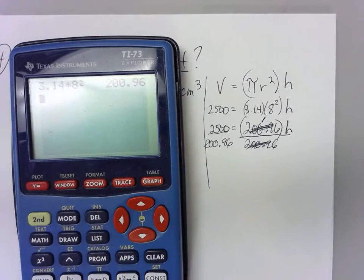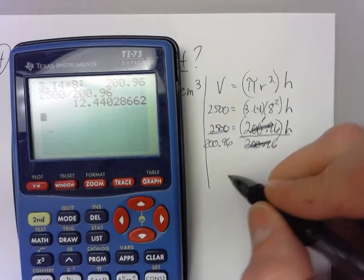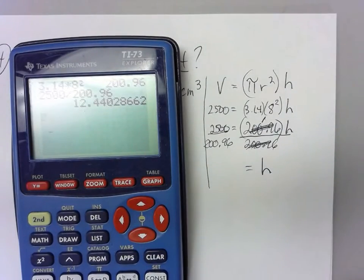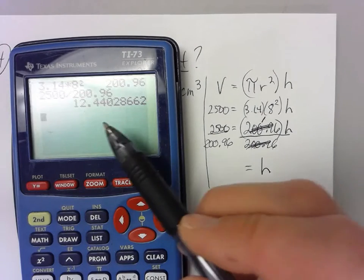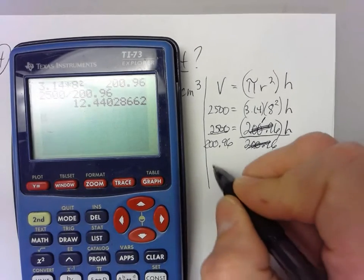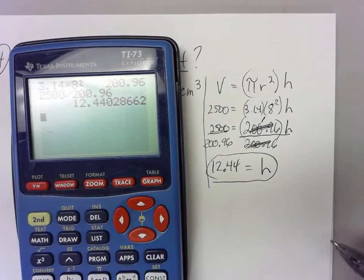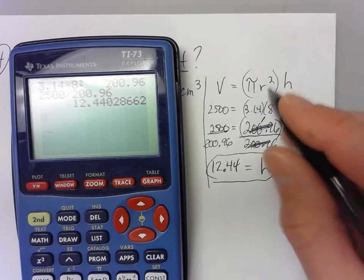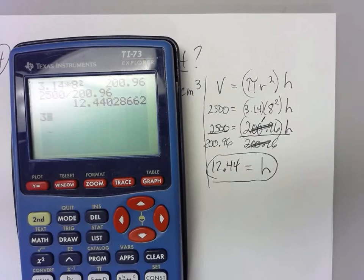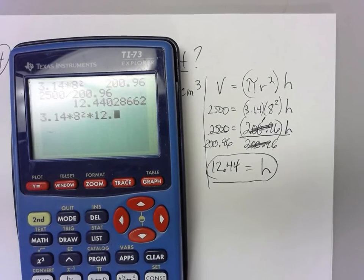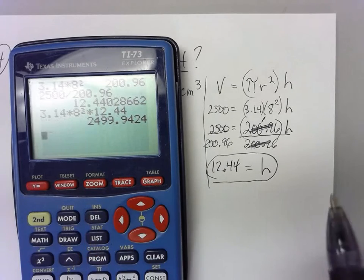Then on the calculator: 2,500 divided by 200.96 gives you the height. Rounding to the hundredths place, the height is 12.44 centimeters. To verify, plug it back in: pi times 8 squared times 12.44 — that gives you almost exactly 2,500, confirming your answer.